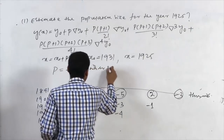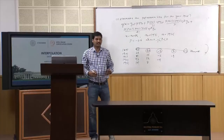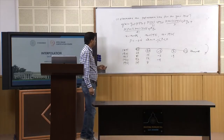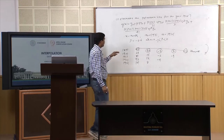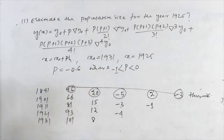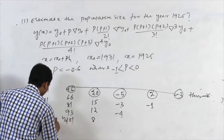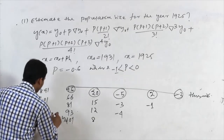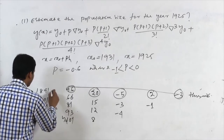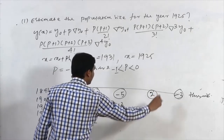P = −0.6 lies between −1 and 0, satisfying the condition for Newton's backward difference formula. The tabular values used are: Y₀=101 (at 1931), ∇Y₀=8, ∇²Y₀=−4, ∇³Y₀=−1, ∇⁴Y₀=−3, corresponding to years 1931, 1921, 1911, 1901, 1891 respectively.